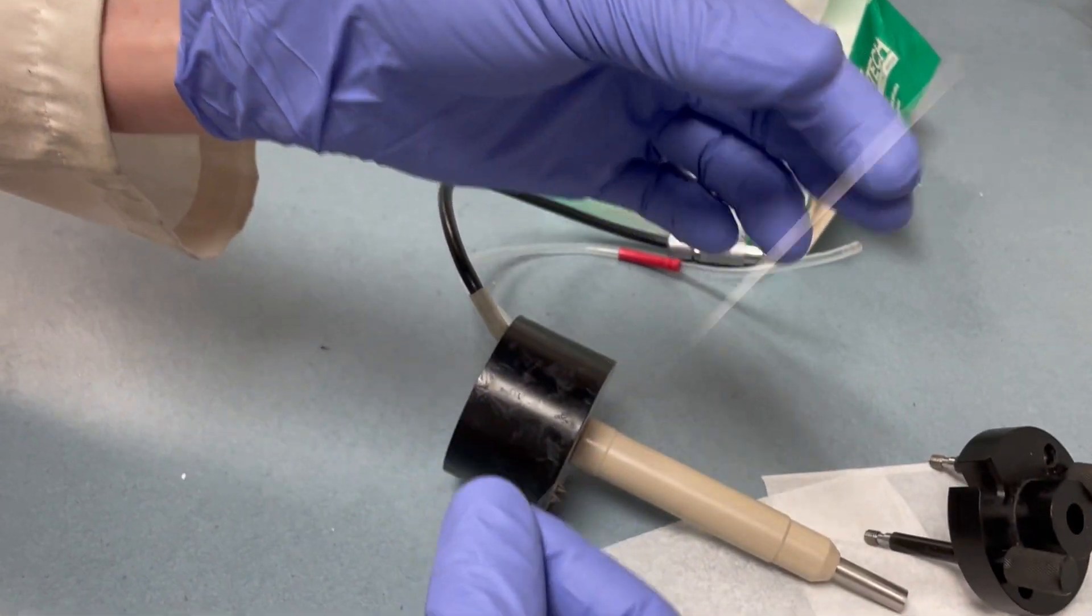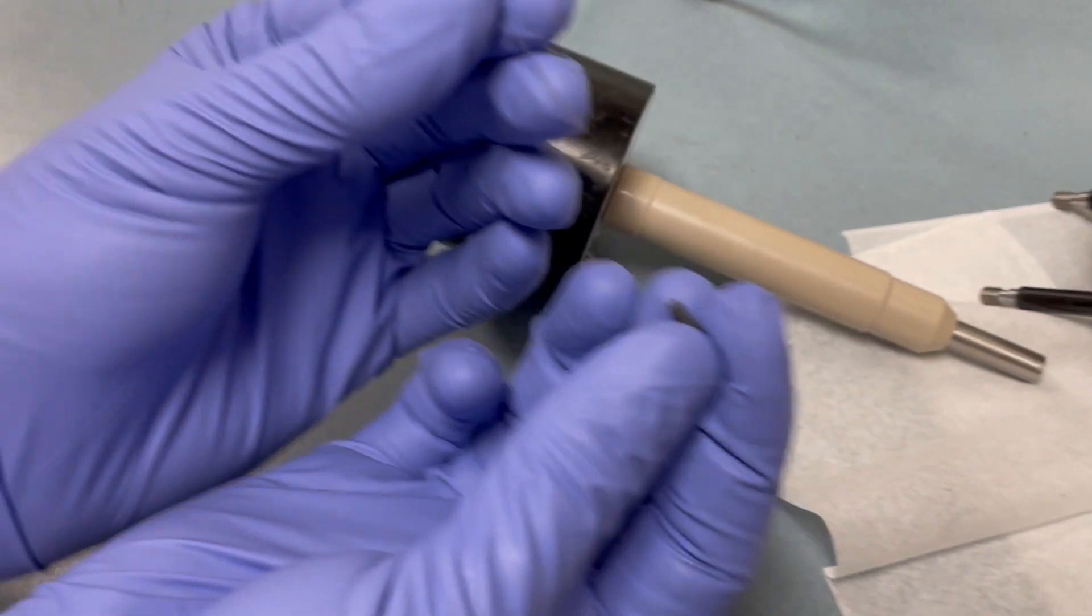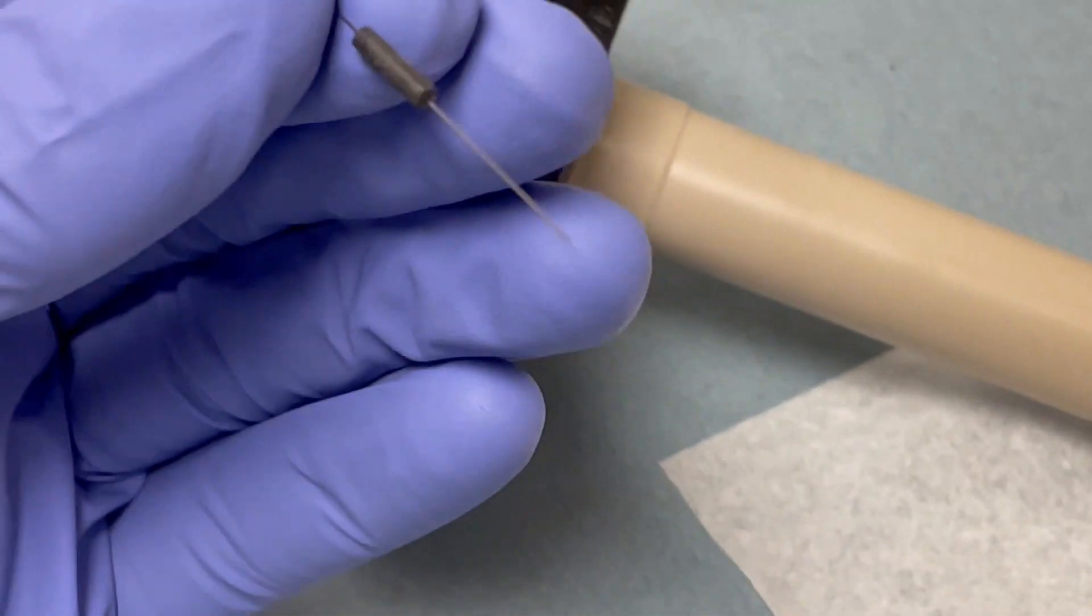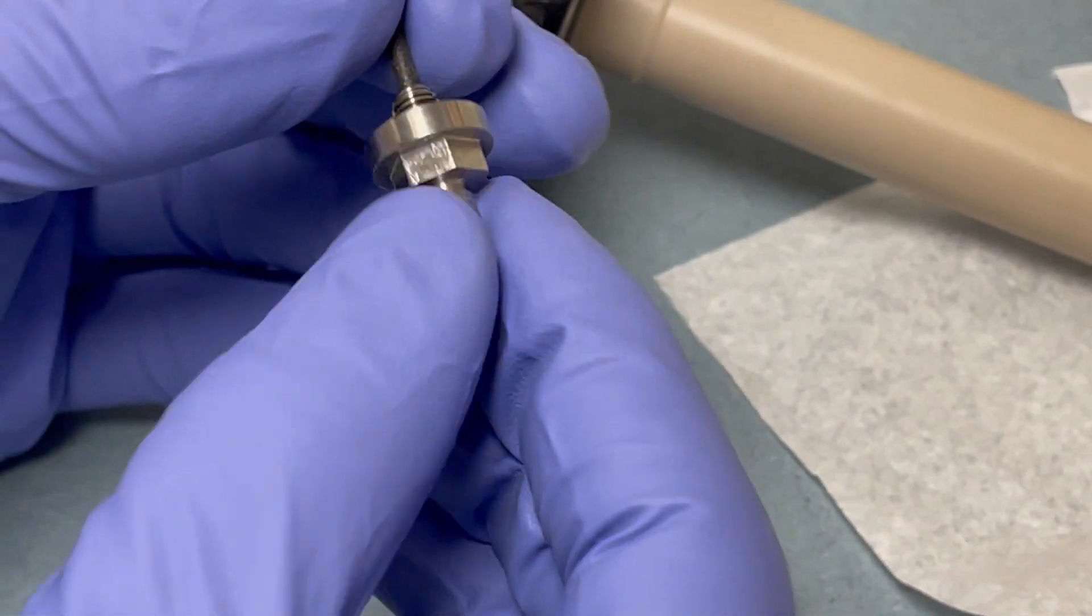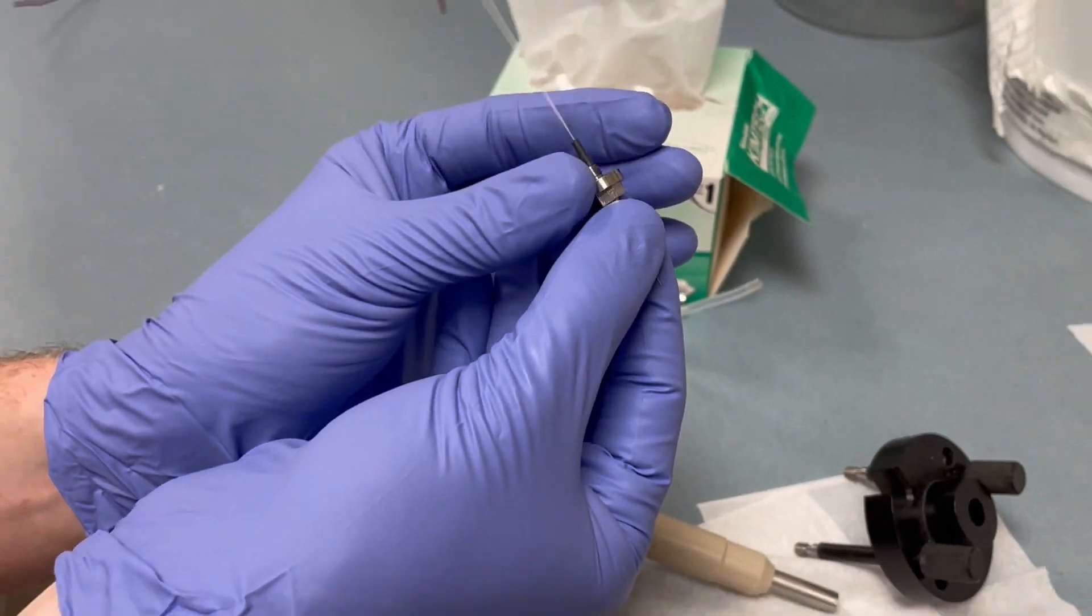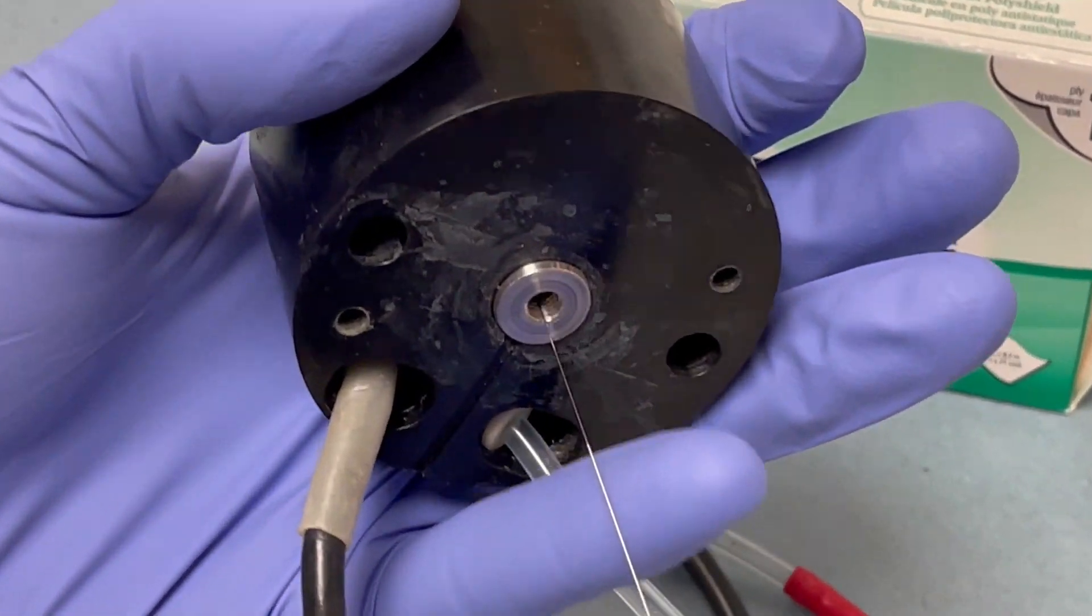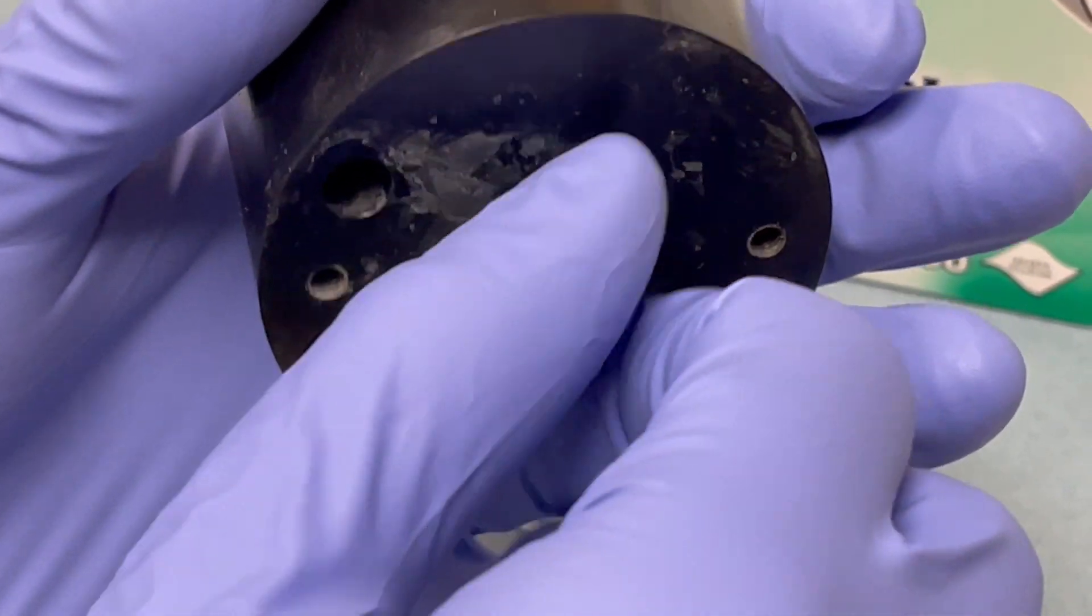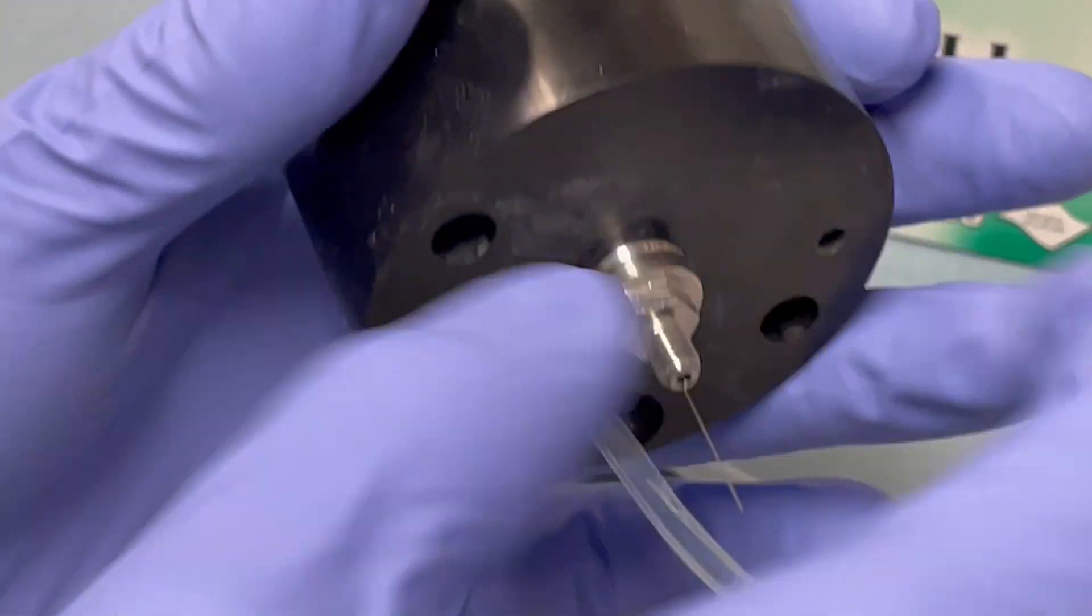Now we need to reassemble everything. First thing to do is to thread the little conductive sleeve onto the capillary, and then put this metal part onto there as well. Now with a little sticking out we'll insert it back into the source. Screw the metal part back on.